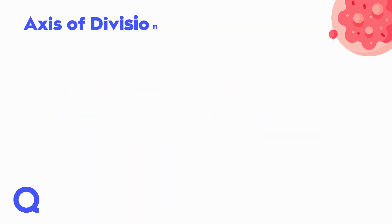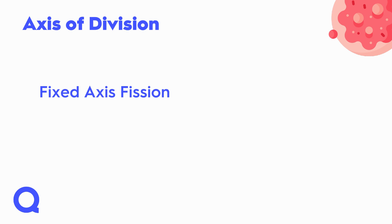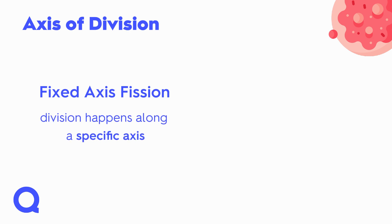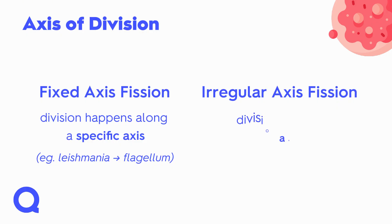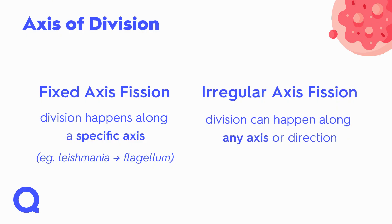Multiple fission splits into more than two new cells, like plasmodium. On the other hand, the axis of division can be fixed axis fission, where division happens along a specific axis due to cell structure — such as leishmania because of its flagellum. In irregular axis fission, division can happen along any axis or direction, and amoeba is a great example.